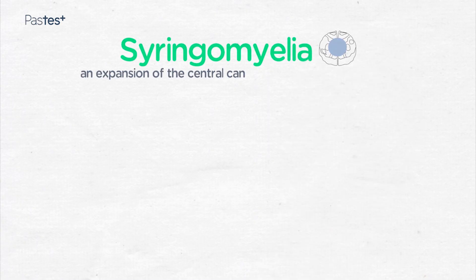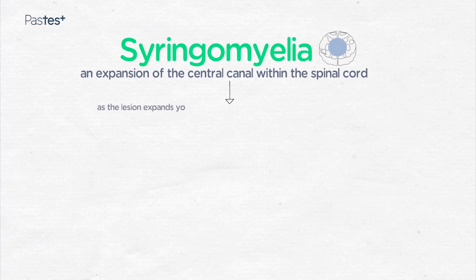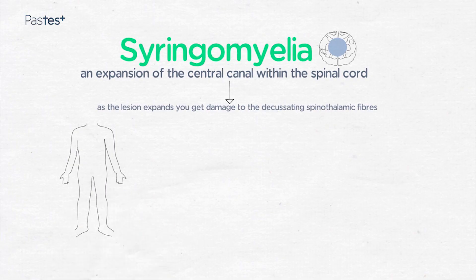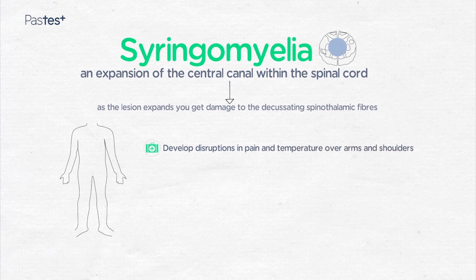The third syndrome is syringomyelia. This is an expansion of the central canal within the spinal cord and as that lesion expands, you get damage initially to the decussating spinothalamic fibres. This means that patients develop disruptions in pain and temperature sensation, usually over the arms and shoulders in a cape-like distribution. It's very unusual for the syrinx to be sufficiently large to affect the dorsal columns, and therefore vibration and joint position sense are spared.